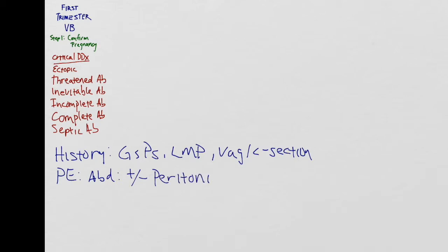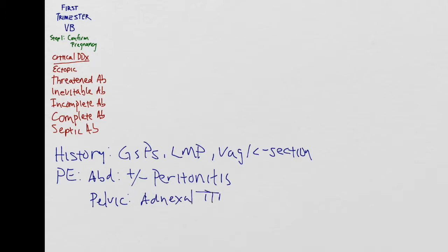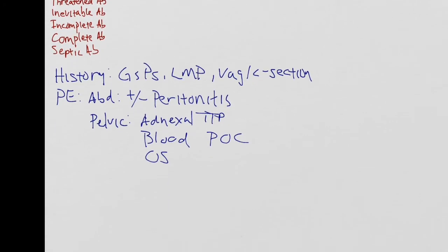On physical exam, evaluate the abdomen to see if there are any signs of peritonitis, because this could be secondary to a ruptured ectopic. If the patient has a positive pregnancy test, peritonitis on abdominal exam, and a FAST exam that is positive, OB should be consulted emergently for a most likely ectopic pregnancy. On pelvic exam, try to elicit adnexal tenderness, evaluate the vaginal vault for evidence of blood or products of conception, and on bimanual exam note whether the OS is open or closed.